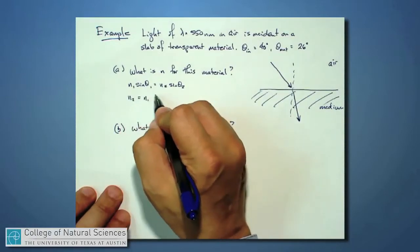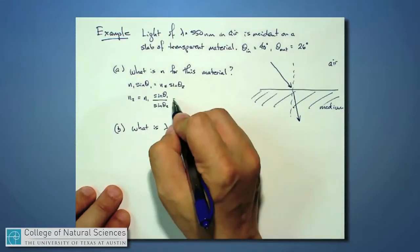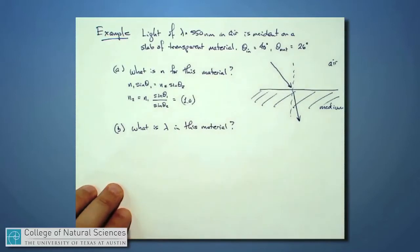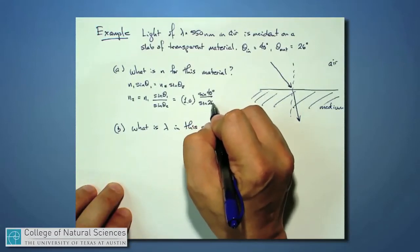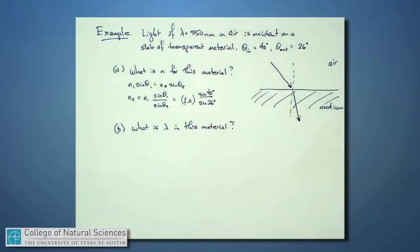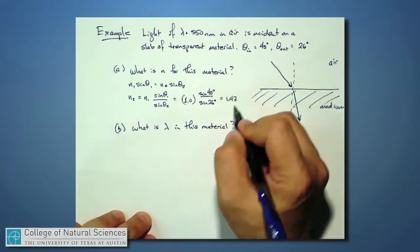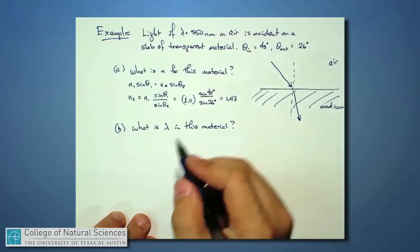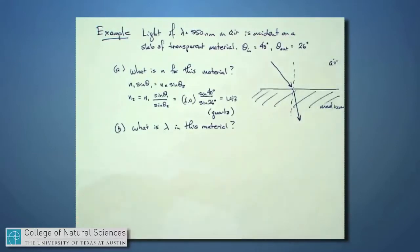N2 will equal N1 times the ratio sine of theta 1 over sine of theta 2, and that will equal 1.0 times the sine of 40 degrees divided by the sine of 26 degrees. And I don't have those numbers memorized, but I encourage you to plug them into a calculator. And you find out that this is about 1.47. If I were to look up the index of refraction of various materials, this is pretty close to the index of refraction of quartz. So quartz is a particular kind of crystal.